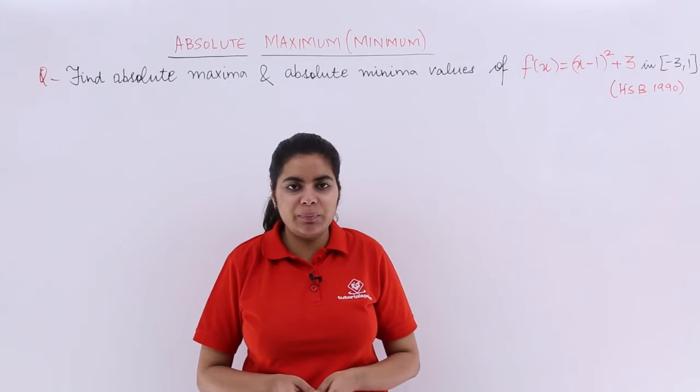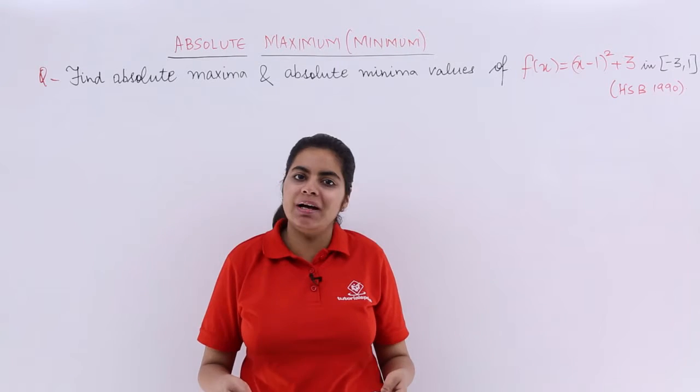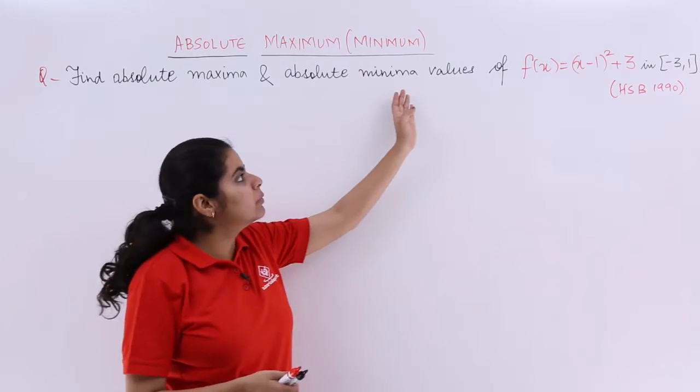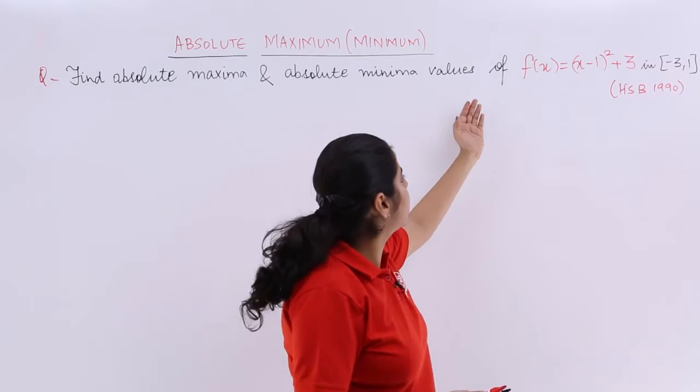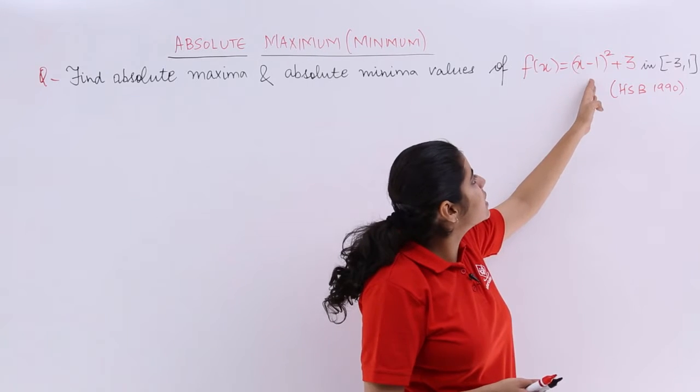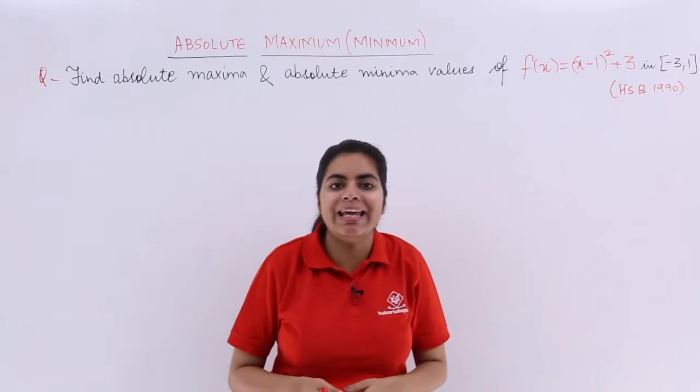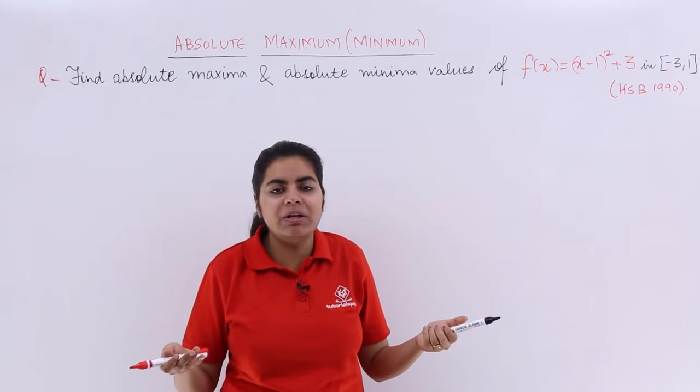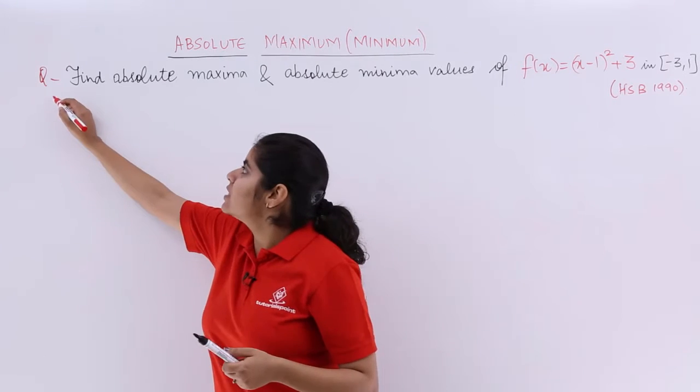In this video, let's see a numerical problem based on absolute maxima and absolute minima. It says find absolute maxima and absolute minimum values of f(x) = (x-1)² + 3 in the interval [-3, 1]. That is the interval given to us. A previous year examination question, let's write the solution.